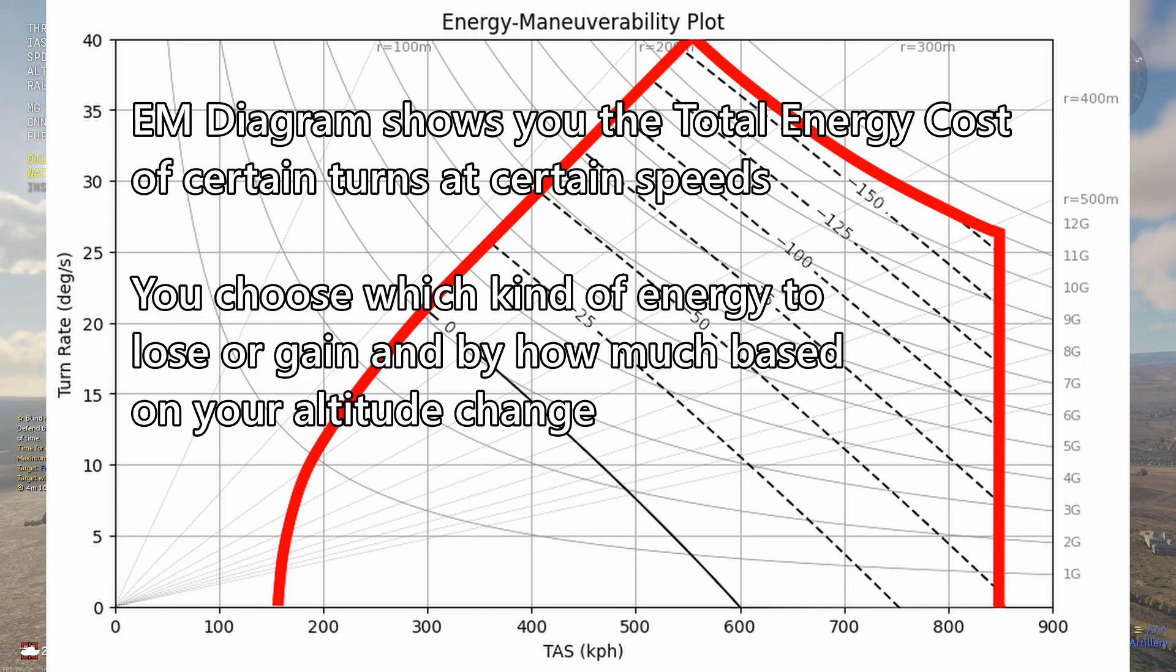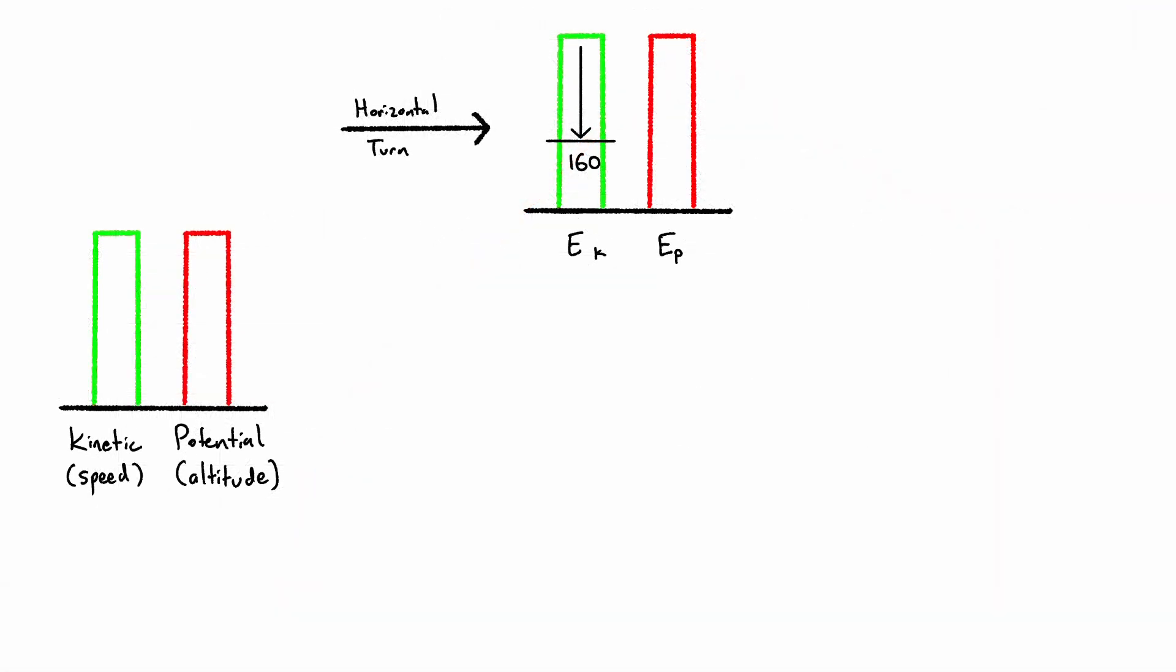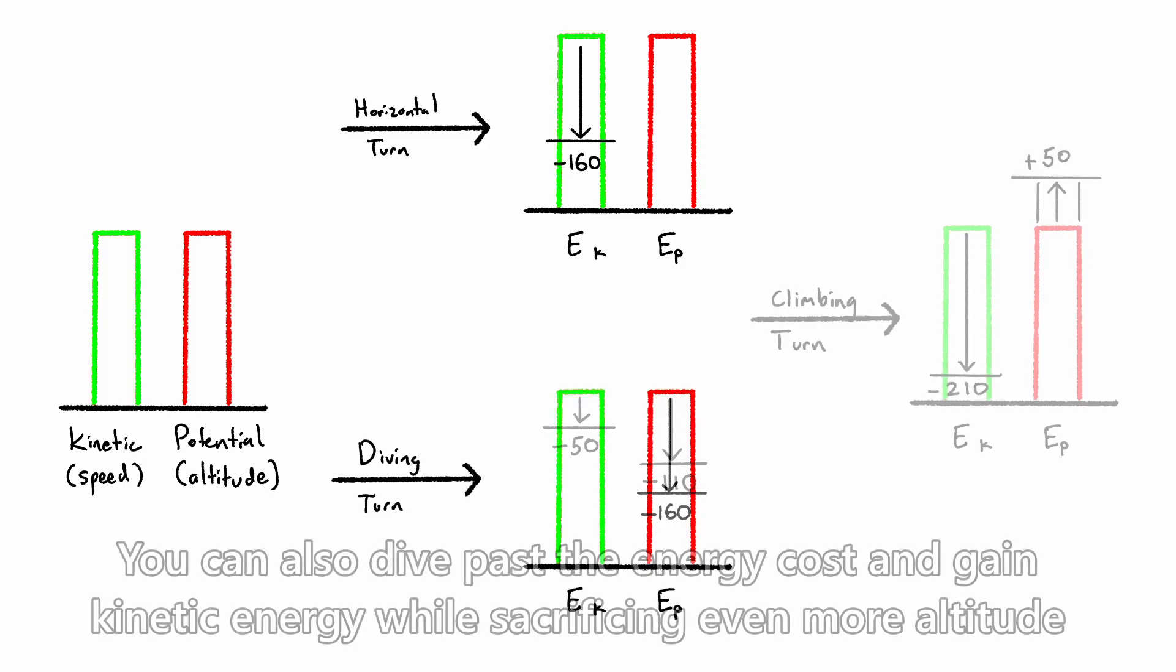It's up to you to decide whether you want to perform that turn, and whether you want to pay that cost using kinetic or potential energy. It's up to you to decide what combination of potential or kinetic energy you want to pay with, by deciding whether to maintain altitude and turn horizontally, sacrificing speed, to dive and sacrifice potential energy, or to climb and gain potential energy but lose even more kinetic energy.